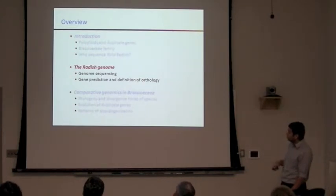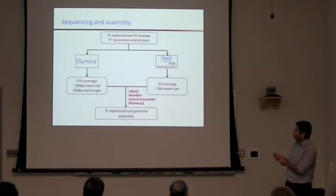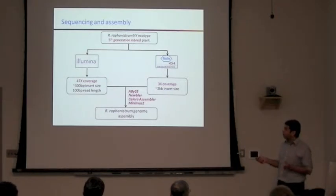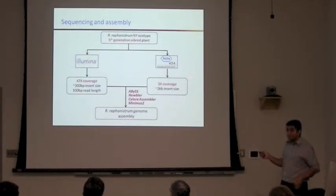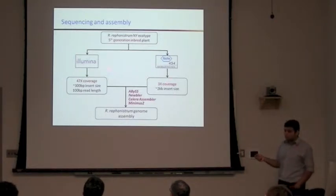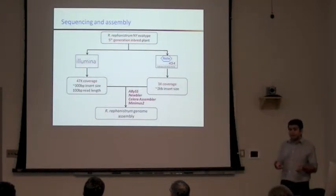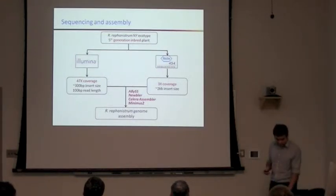We sequenced a fifth-generation inbred plant of Raphanus raphanistrum, using both Illumina and 454 sequencing. Illumina reads are very short, while 454 reads had variable but quite long read lengths, though we could only sequence a small amount with 454. We had 3x coverage of 454 sequencing but 47x coverage of Illumina. Using a bunch of different sequence assembly programs, we assembled what Ian likes to call a drafty genome of Raphanus raphanistrum.